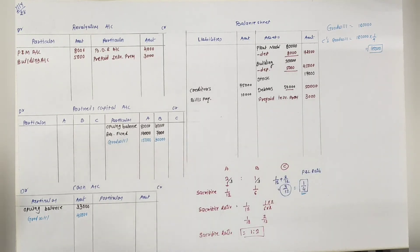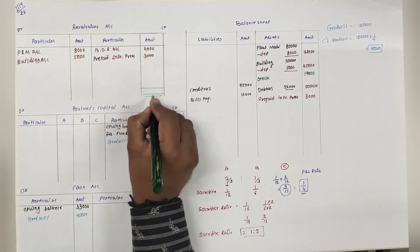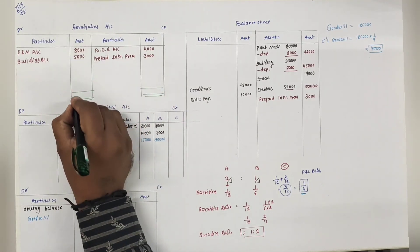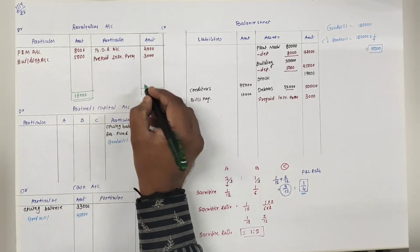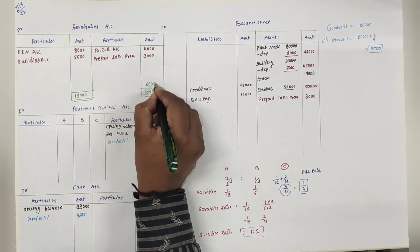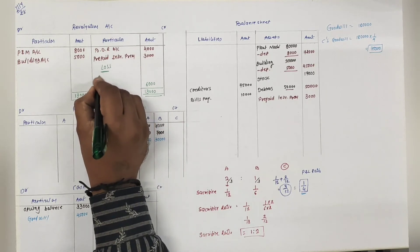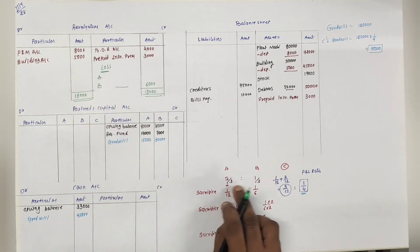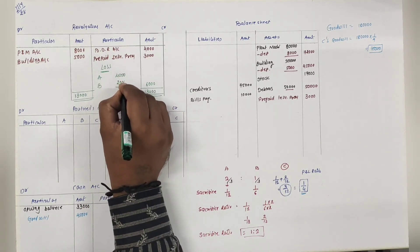अब एक ही adjustment बाकी है - adjustment number 2, C के capital का. उसके लिए पहले revaluation का total लगाना पड़ेगा. 8+5 = 13,000 debit side. Credit side: 4+3 = 7,000. 13 में से 7 minus करेंगे तो 6,000 loss आया. Loss A and B के बीच में 2:1 में share करेंगे - 4,000 and 2,000.